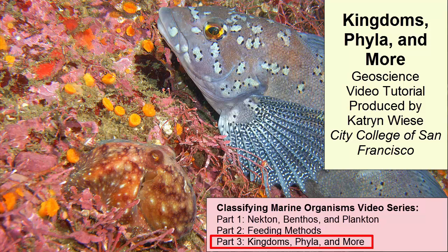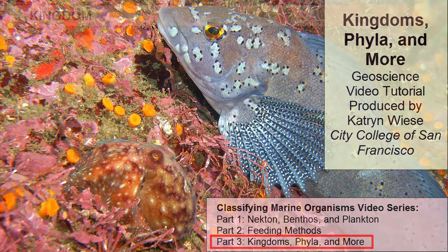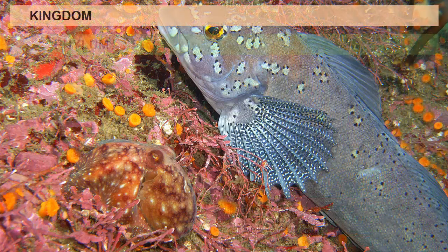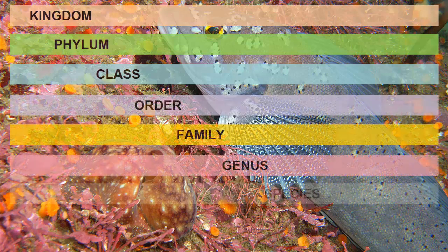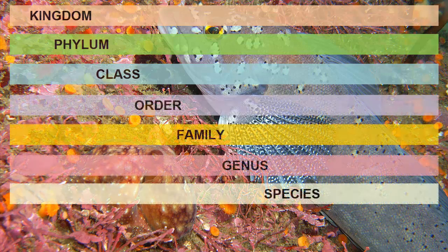All living organisms are grouped and classified by shared genetic traits into kingdom, phylum, class, order, family, genus, and species. By grouping organisms by shared genetic traits, we better understand physiology and ecological needs as well as the overall evolution of life.